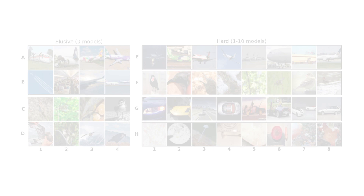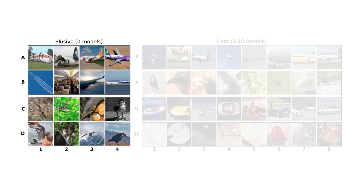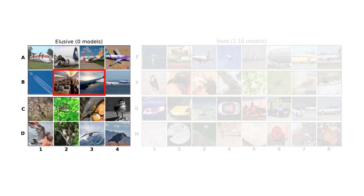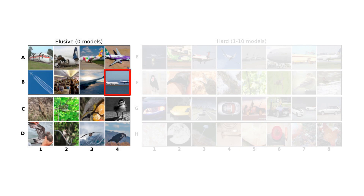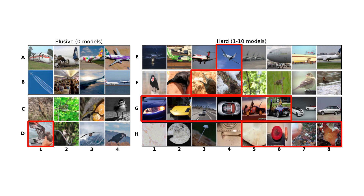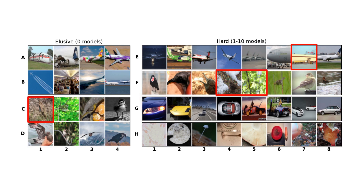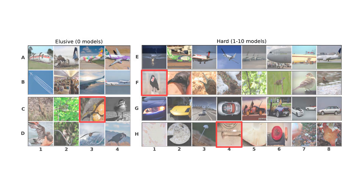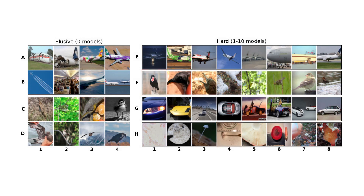Finally, we show a few examples of elusive and hard images, where we consider hard images to be those with 10 or fewer correct predictions. These examples highlight several properties that might cause images to be challenging. Some images might be elusive because they contain irrelevant information, incomplete objects, or object ambiguity. Some other patterns we see are uncommon pose or viewpoint, camouflage where the subject blends into the background, or distractor objects which might confuse the classifier. Please note that these correlations are observational only and do not directly expose the true reason for the errors, but they can help us in understanding what might need to be addressed in the future.